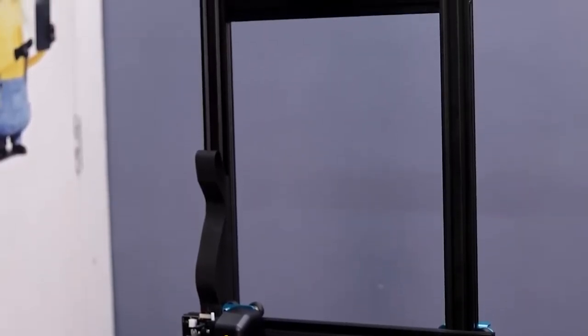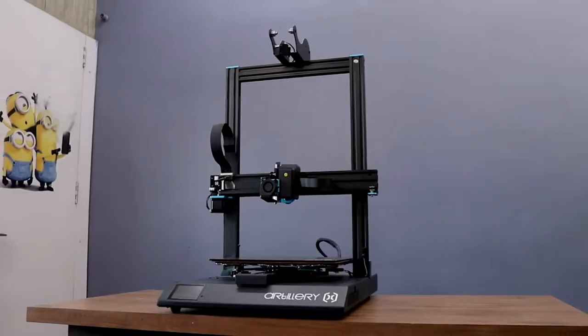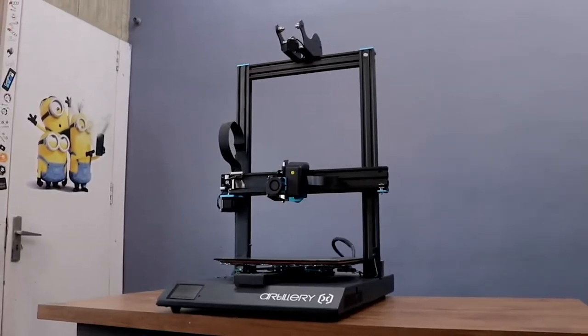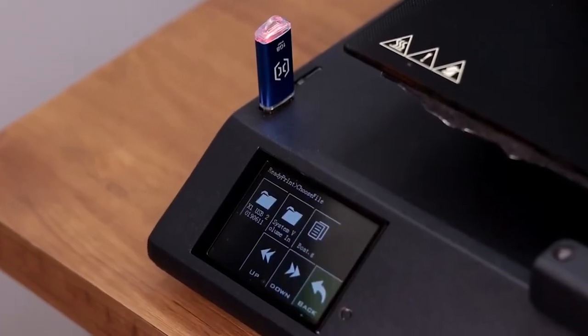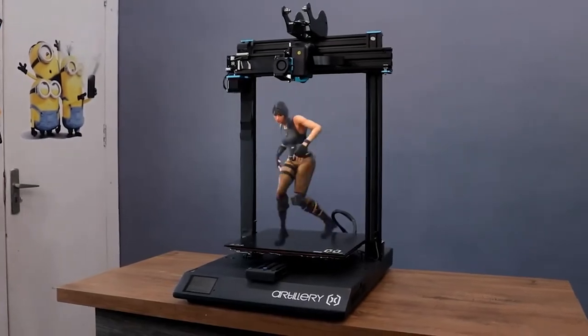Okay, so it's time to check its print quality, but before that let me tell you about this printer. Its frame is completely made of aluminum and it's very sturdy. It has a color touchscreen display which is very responsive. It has 300 by 300 by 400 size build volume so we can also print large objects on it.